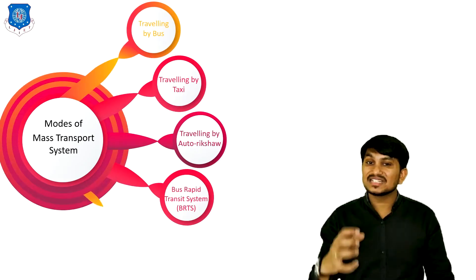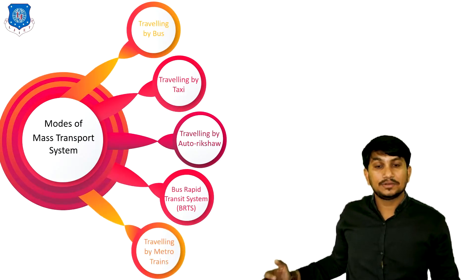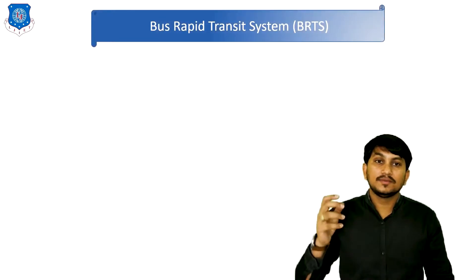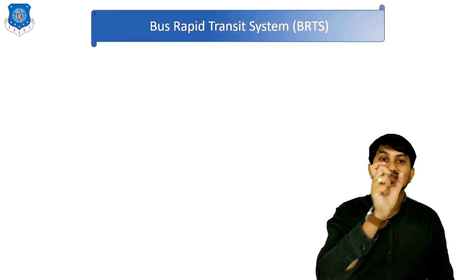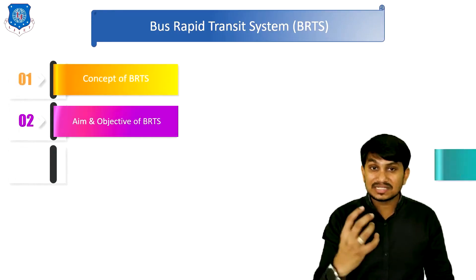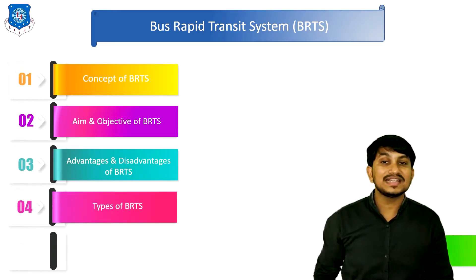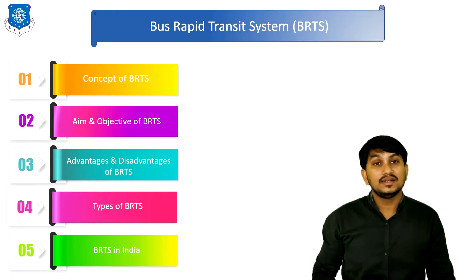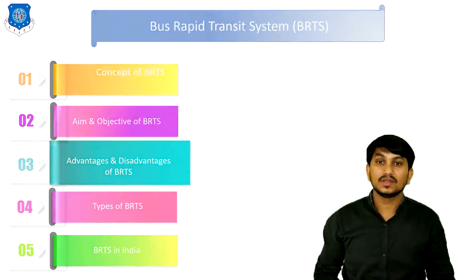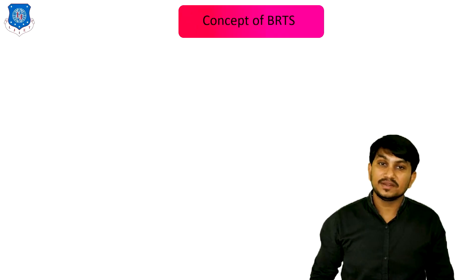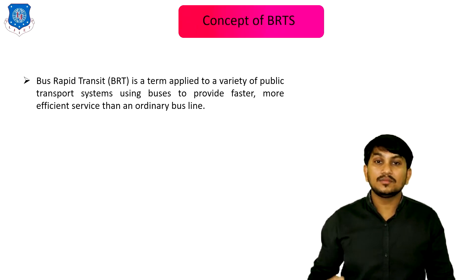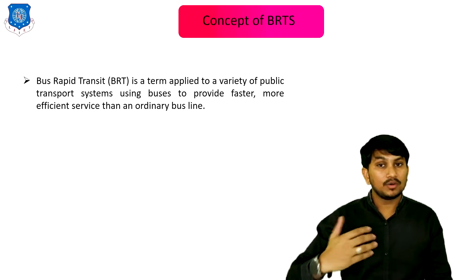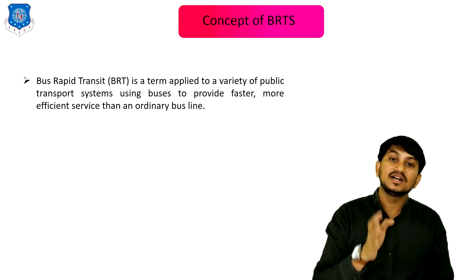The fourth mode of mass transportation is BRTS and the fifth is Metro. Let us discuss BRTS now. The full form of BRTS is Bus Rapid Transit System. We will discuss the concept of BRTS, its aims and objectives, various advantages and disadvantages, various types of BRTS, and various running BRTS systems in India. Bus Rapid Transit is a term applied to a variety of public transport systems using buses to provide faster, more efficient service than an ordinary bus line.